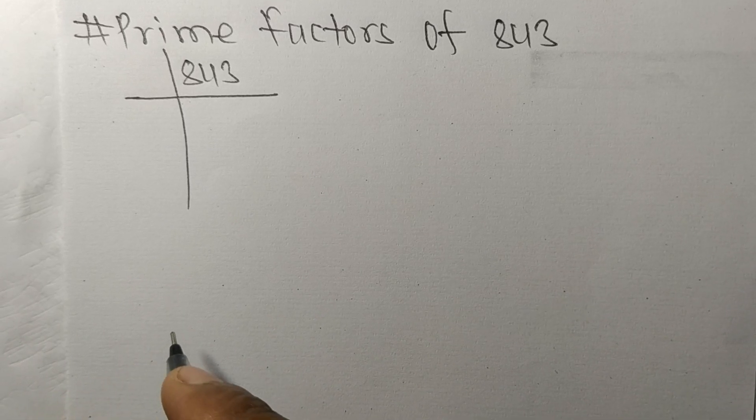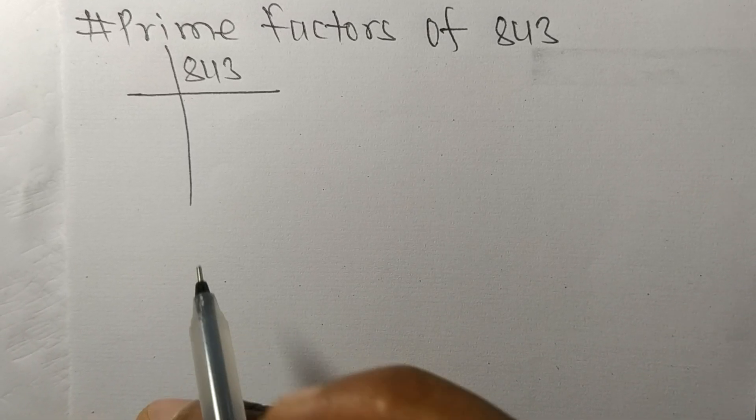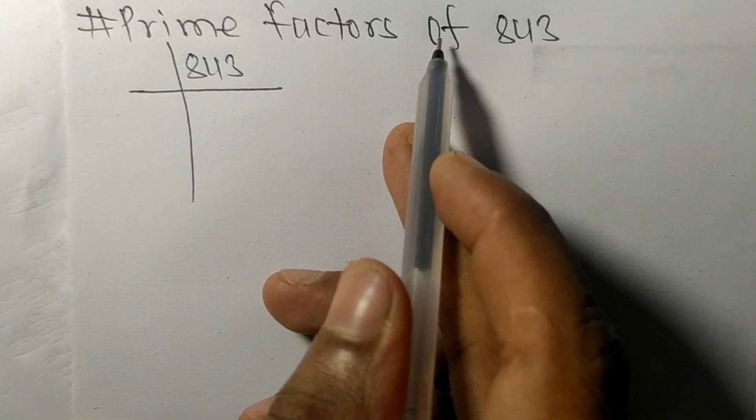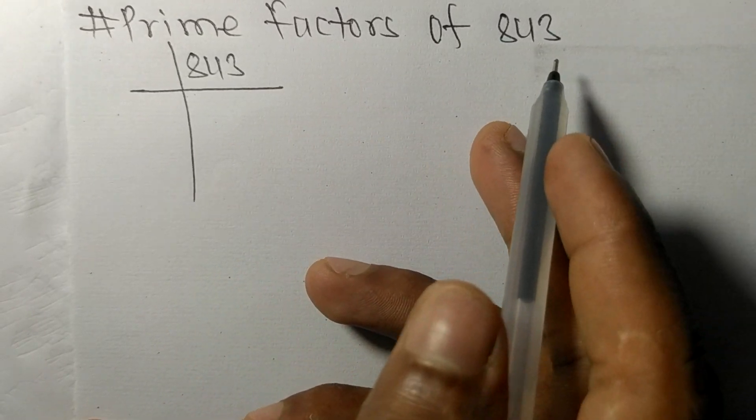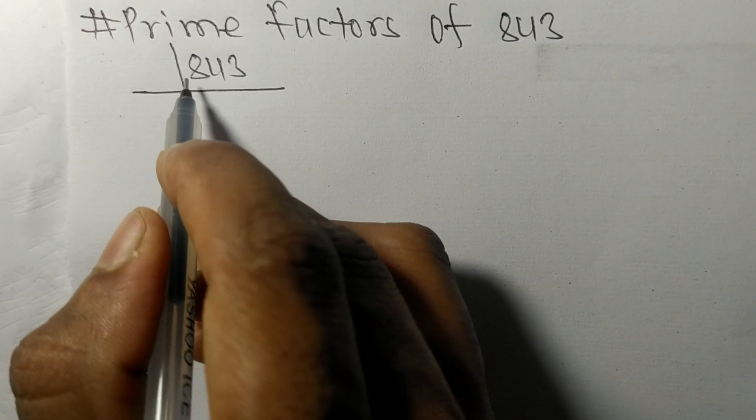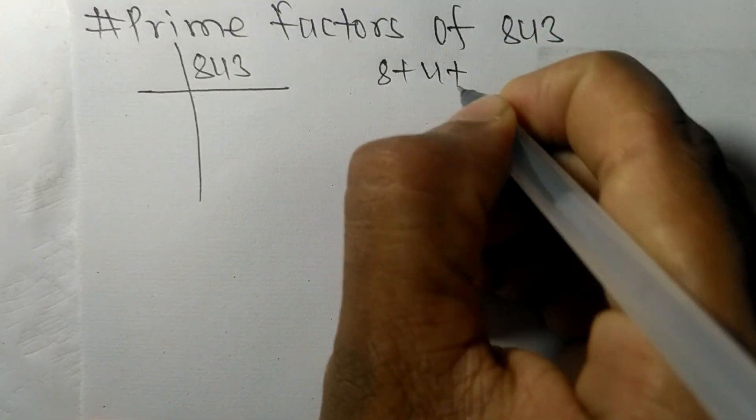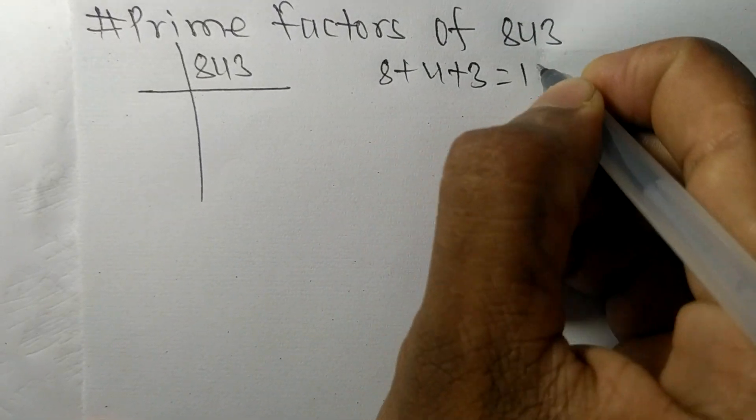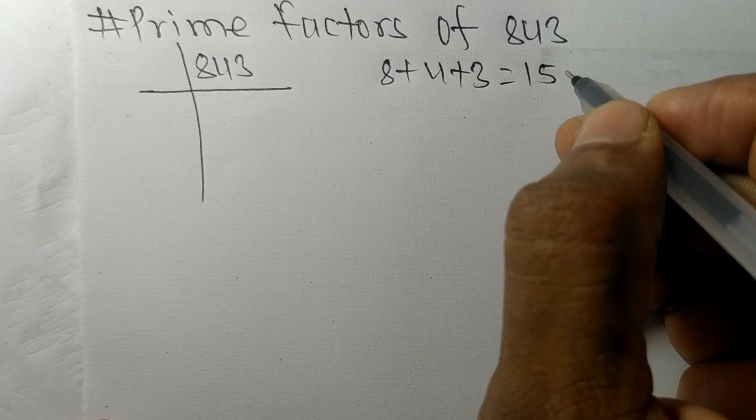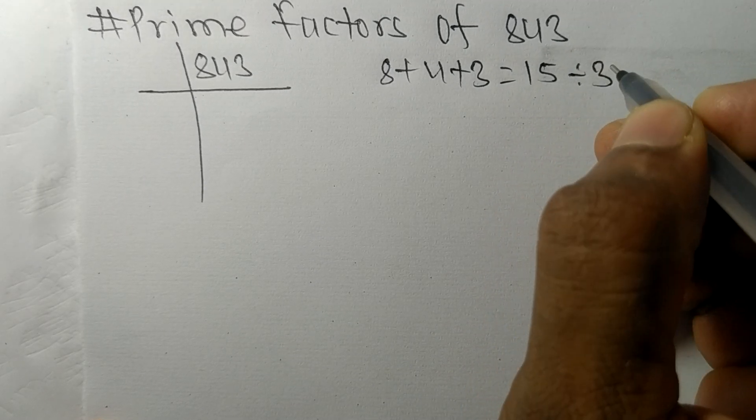Today in this video, we shall learn to find the prime factors of 843. When we add all these numbers—that is, 8 plus 4 plus 3—we get 15, and 15 is exactly divisible by 3.